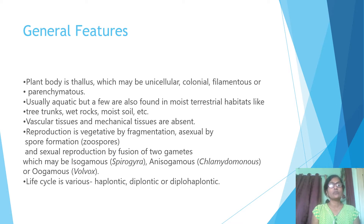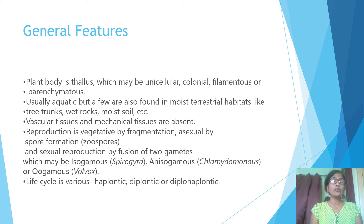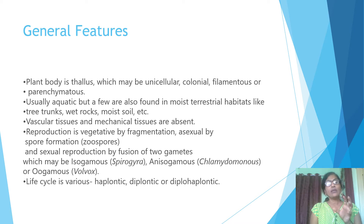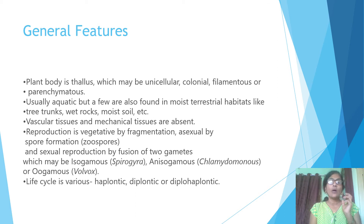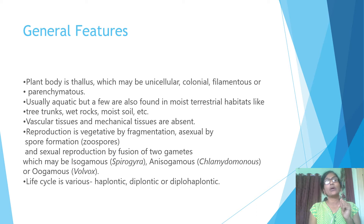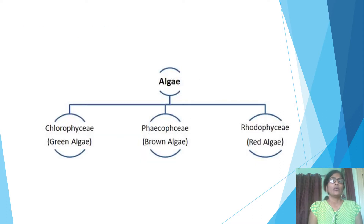Algae can also undergo sexual reproduction. The life cycle is of various types: haplontic, diplontic, and diplo-haplontic. In a haplontic life cycle, the haploid stage is dominant. If the diploid stage is dominant, it is diplontic. The chromosome number n represents haploid and 2n represents diploid — so equal time for both stages is diplo-haplontic.